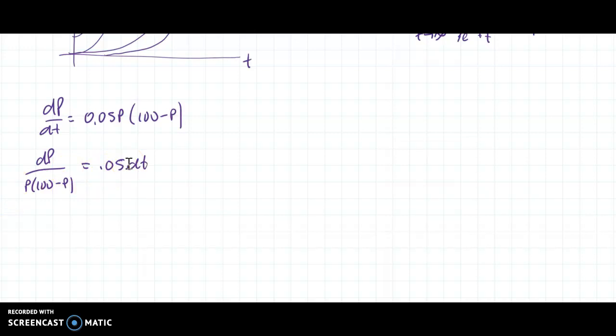From here, I'm going to do some partial fractions work. So I'll just do some scratch work over here. 1 over P(100 - P) is equal to something over P plus something over 100 - P. Remember, we use cover up. I plug in 0 and cover up this piece. And that gives me what goes on the top here.